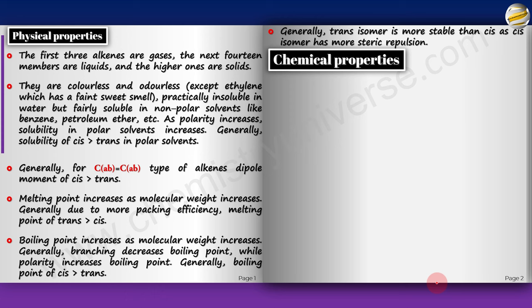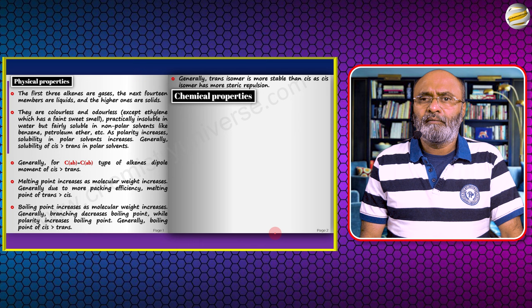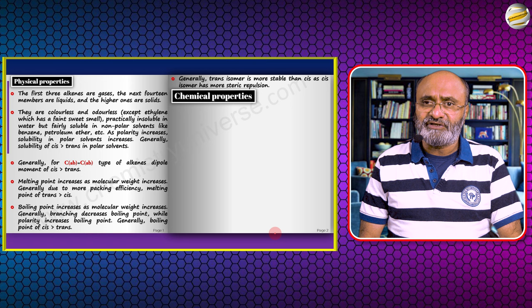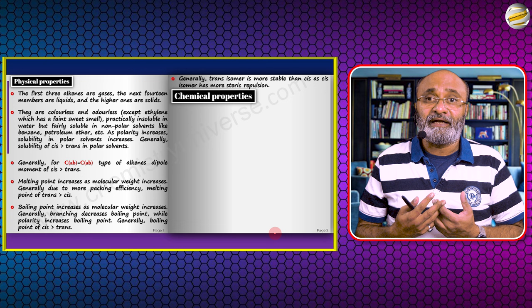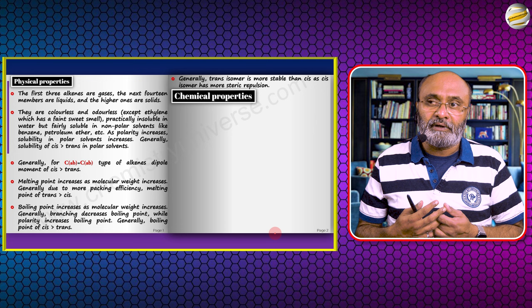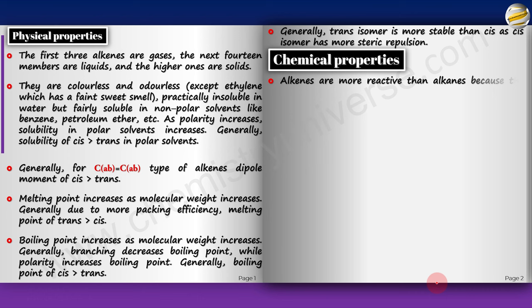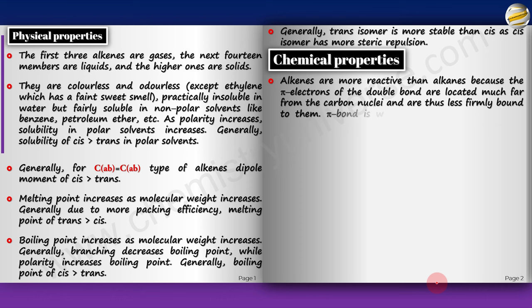Now let's get down to chemical properties. Alkenes are more reactive than benzene towards electrophilic reagents. In benzene there is a circular closed loop pi electron cloud which is not that much exposed, whereas in alkenes the pi electron clouds are very much exposed. Alkenes are more reactive than alkanes because the pi electrons of the double bond are located much farther from the carbon nuclei, and the pi bond is weaker than sigma bond and more easily broken.